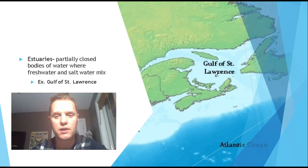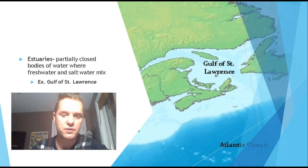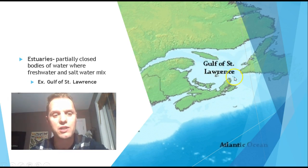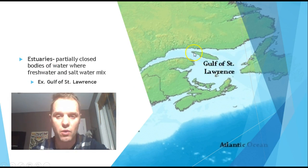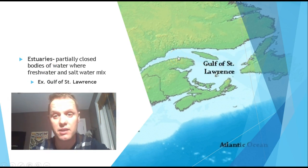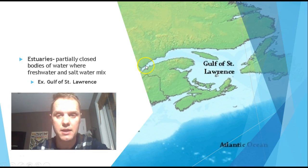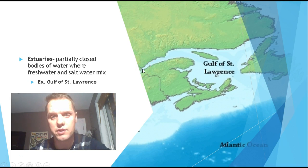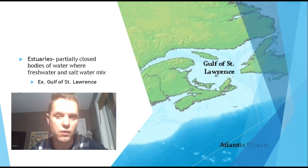Estuaries are areas like the Gulf of St. Lawrence. They are partially closed bodies of water where fresh water and salt water mix, creating a very unique ecosystem. All our water from Lake Erie, for example, will eventually drain into Lake Ontario and end up in the Gulf of St. Lawrence, mixing with ocean salt water.